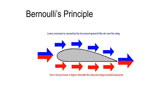Bernoulli's principle accounts for some portion of the lift generated by an aircraft wing. As the wing is forced through the air, the air flowing over the upper, more highly cambered portion must increase in velocity to keep up with the air flowing under the wing. This is due to the air flowing over the top of the wing having to travel a greater distance due to the upper camber. This increase in velocity results in a decrease in pressure, and the relatively higher pressure beneath the wing acts to force the wing upward.